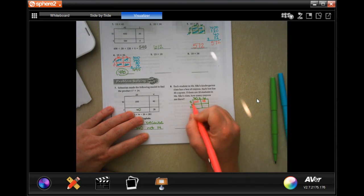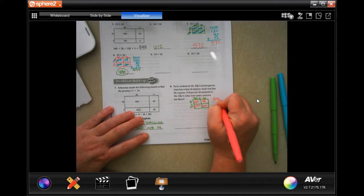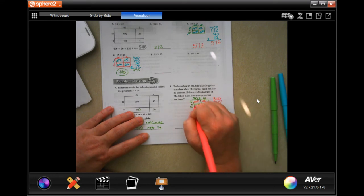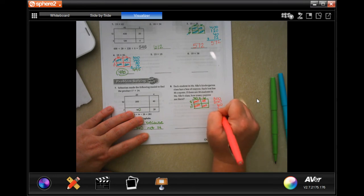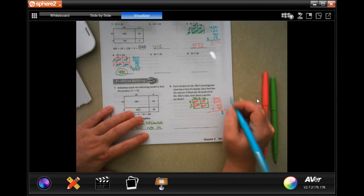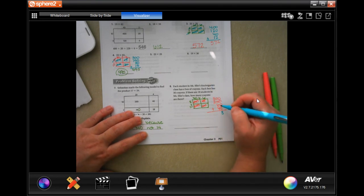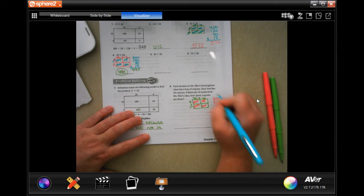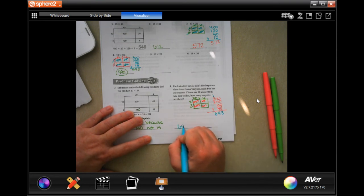10 times 30. Well, 1 times 3 is 3. It's 2 0's. And 10 times 6 is 60. So now I'm just going to go over to the side. 300. 240. 60. And 48. And I'm going to add them up. All the way down. Just 8. 4 plus 6 is 10. Plus 4 more is 14. 1 plus 3 is 4. Plus 2 more is 6. So 648 crayons.